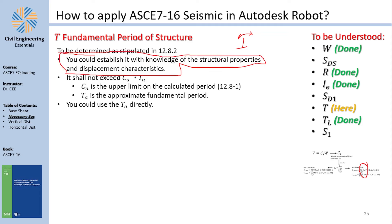In a modal analysis, each mode has its own period (T = 1/frequency). However, which mode period to select is complex. The code simplifies this: T shall not exceed CU × TA, where CU is a coefficient and TA is the approximate fundamental period defined by the code.